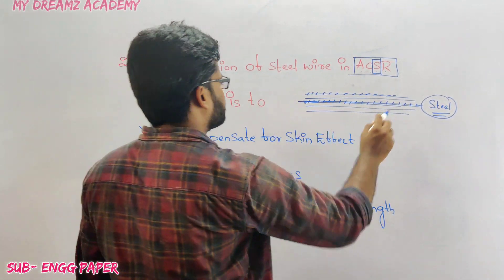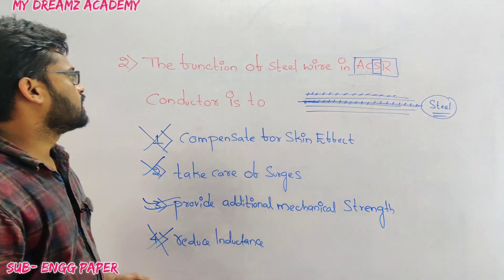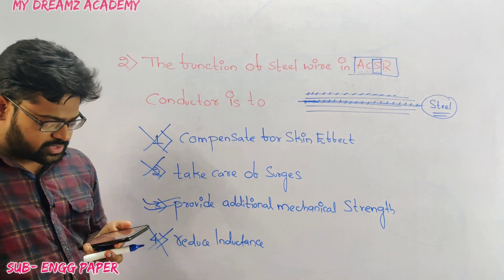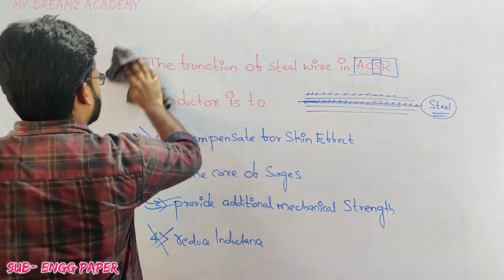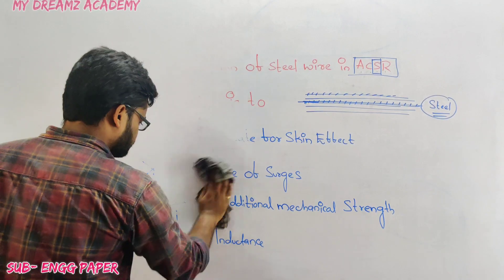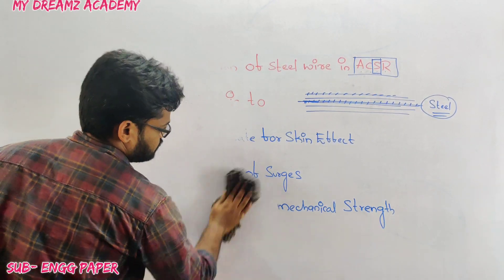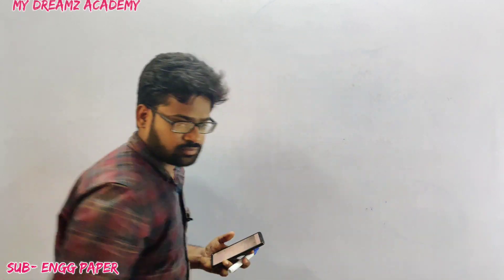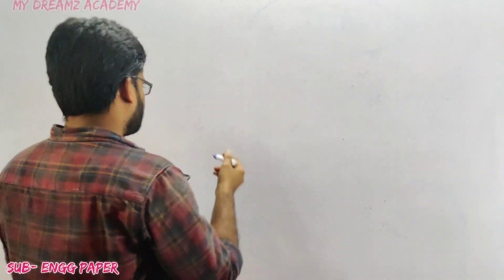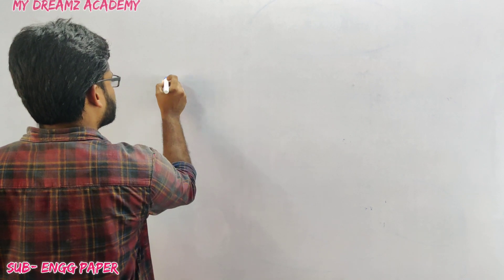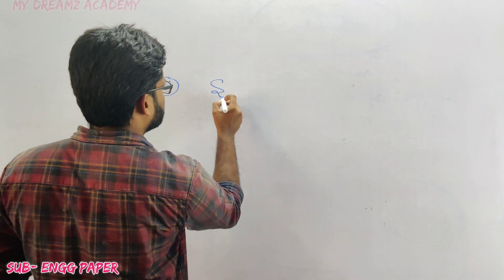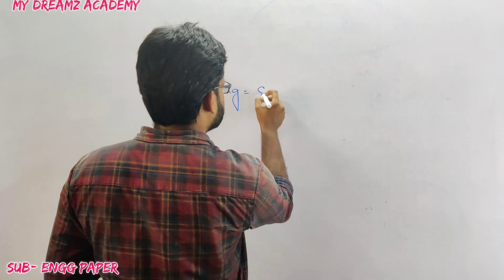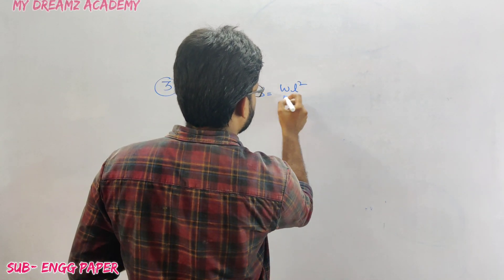Steel does not compensate for the skin effect, it does not take care of surges, and it does not reduce the inductance of the conductor. That is the function of steel wire in ACSR conductor. Question number three is from sag calculations in power systems. The sag formula is S = ωL²/8T, where ω is the weight of the conductor and T is the tension.